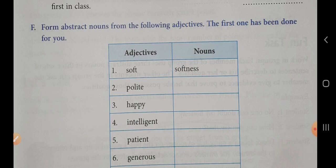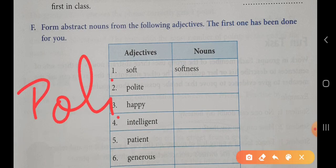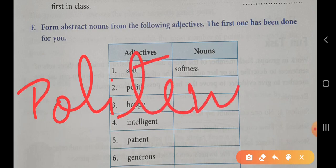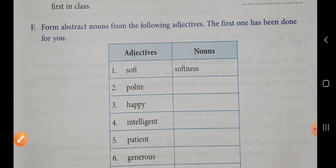will do with polite. You can see that it is written: polite. For polite, what will be the abstract noun? Politeness. You can see: polite + ness = politeness. The third one is happy.